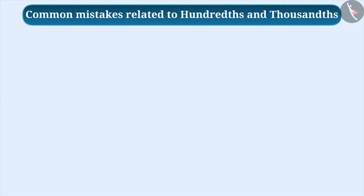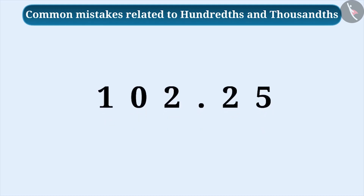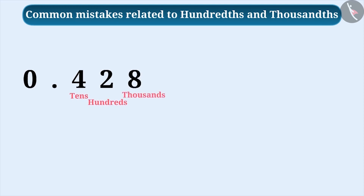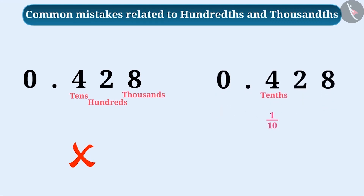Now we will see common mistakes related to hundredths and thousandths. Some students do not know that place value keeps decreasing as we move from left to right. Seeing similar place names on both sides of the decimal point, they think the values are equal. For example, in 0.428, they might confuse the place names. The correct understanding is that there are four tenths, two hundredths and eight thousandths.